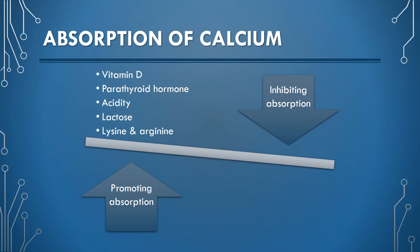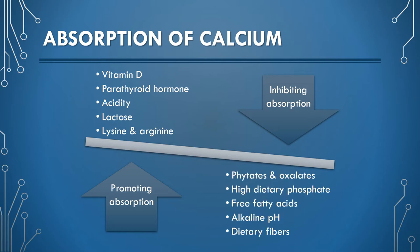Whereas phytates and oxalates, high dietary phosphate, free fatty acids, alkaline pH, and dietary fibers inhibit the absorption of calcium from the gastrointestinal tract.